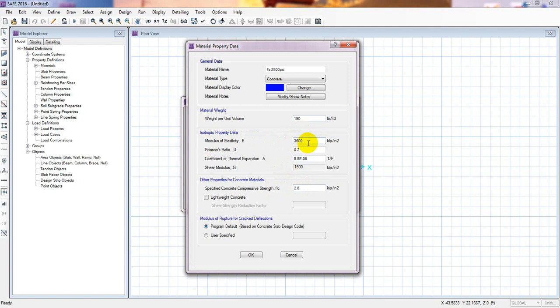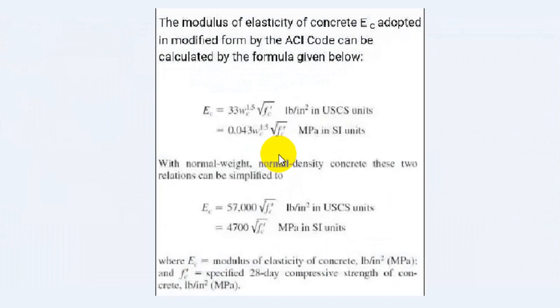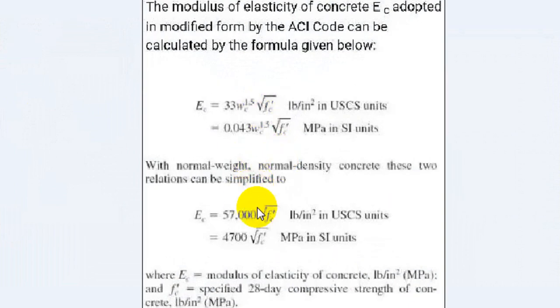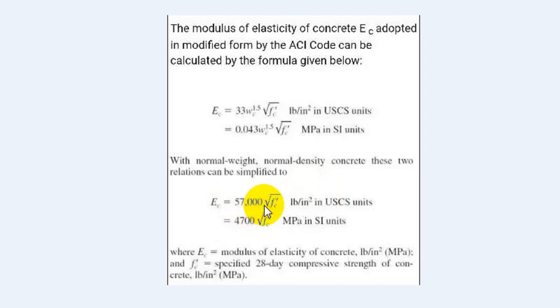To calculate the modulus of elasticity, as per the ACI code, the formula is: E equals 57,000 times the square root of F prime C, where F prime C is in lb per inch squared. So we use 57,000 times the square root of F prime C.